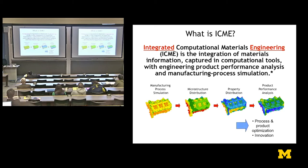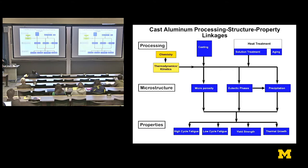Graphically, for a cast aluminum cylinder head: we have a traditional manufacturing simulation that predicts thermal history. From that, we predict local microstructure. From that, we predict local properties. And from that, those local manufacturing-history-sensitive properties go into product performance analysis. That, in a nutshell, is what ICME is. At Ford, starting in the mid to late 90s, for aluminum castings, the critical properties for powertrain castings are high-cycle fatigue, low-cycle fatigue, yield strength, and thermal growth. The critical microstructures were microporosity, eutectic phases, and precipitate structures, affected by the casting and heat treat process.